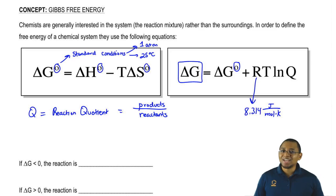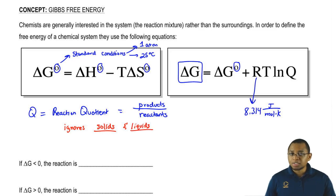Our reaction quotient is just products over reactants. When it comes to Q, it ignores two states of matter: it ignores solids and liquids. If it's a solid or liquid, it ignores it. If it's aqueous or gaseous, it will look at them. So ignore solids and liquids but look at aqueous and gases.